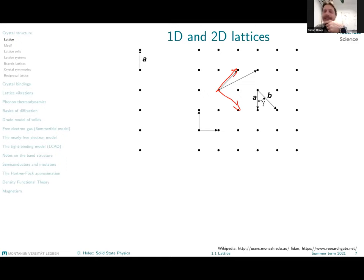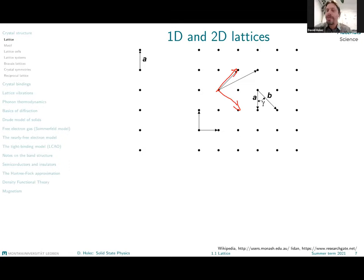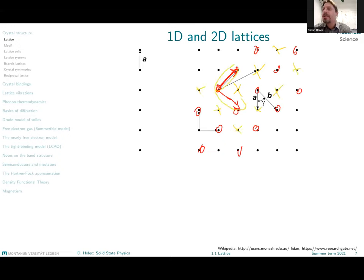Now with this next pair, the majority say yes, but a few said no — and those who said no were correct. Those two vectors do not generate the same lattice. If I take this vector I probe all these points, then move using this vector, probe more points — but I will never reach any of these yellow crosses using just these two vectors.